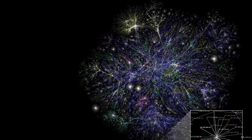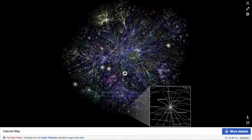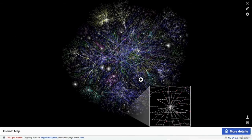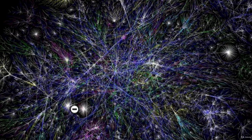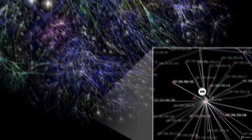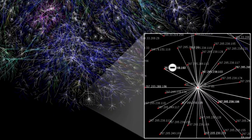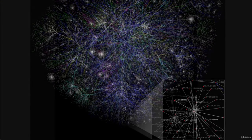Just to show you how insane this is, somebody from the Opti project — I got this off of Wikipedia — mapped out in 2015 just 30% of the network. You can see that each one of these dots is an IP address — a computer that is connected to another computer that is connected to another computer. And that's the internet.